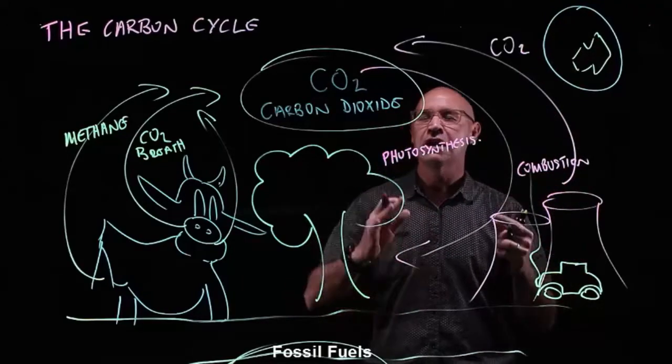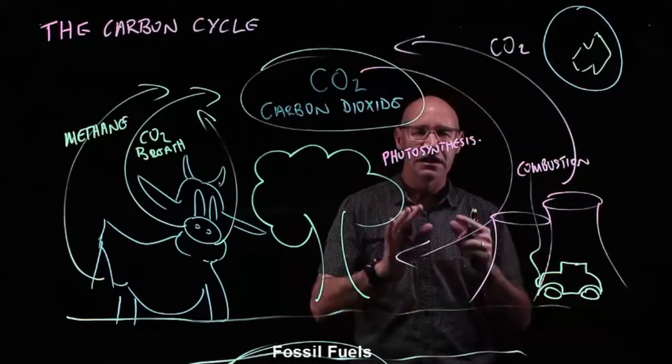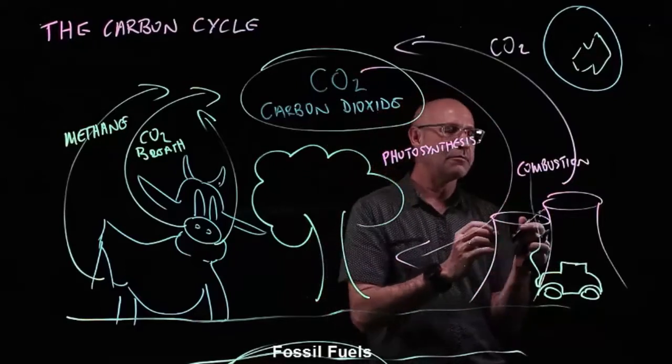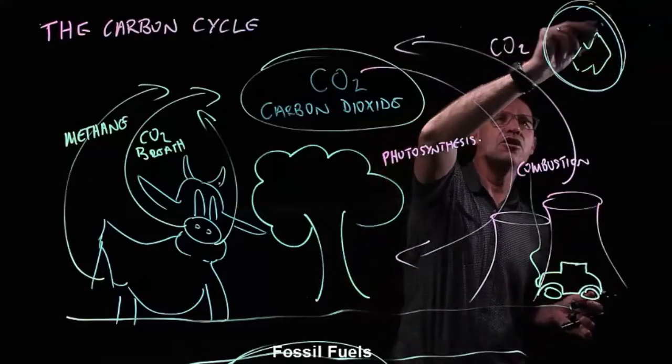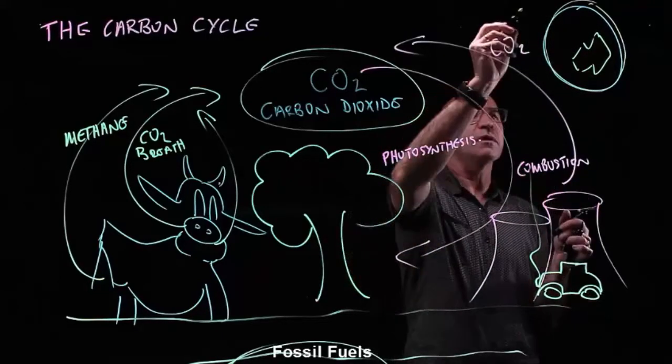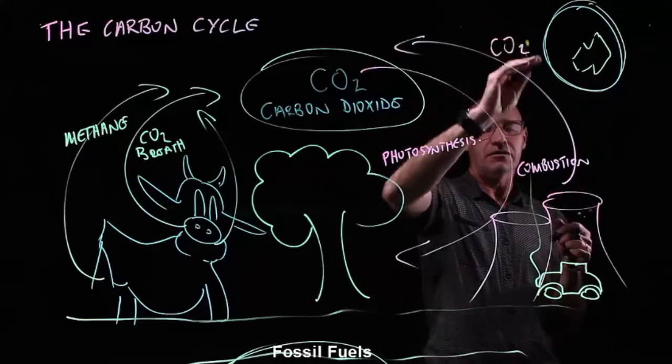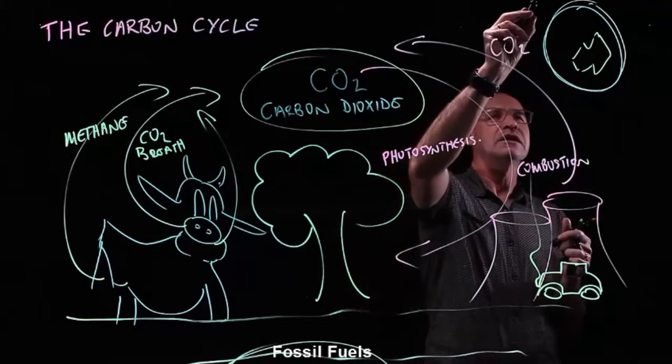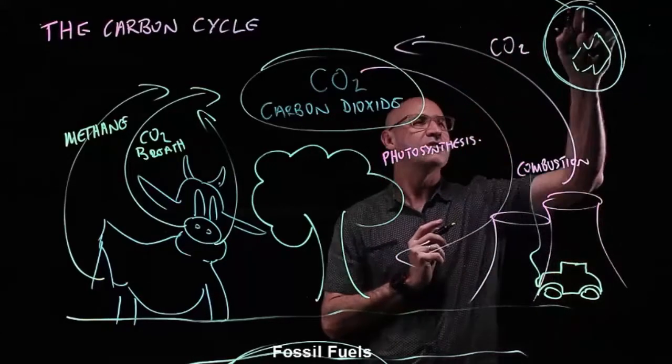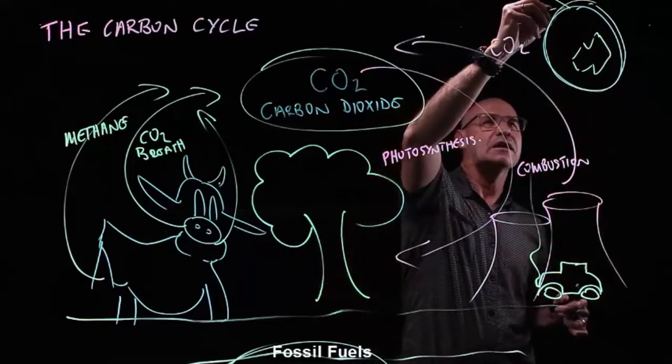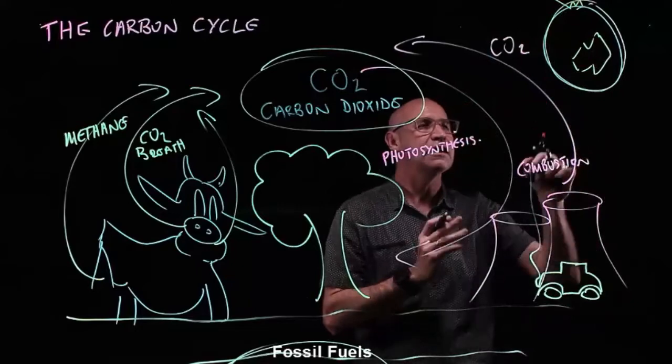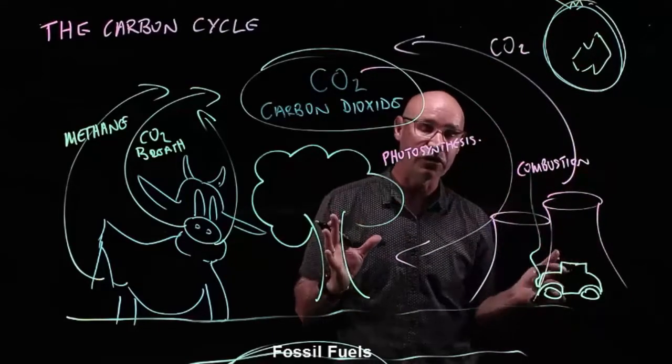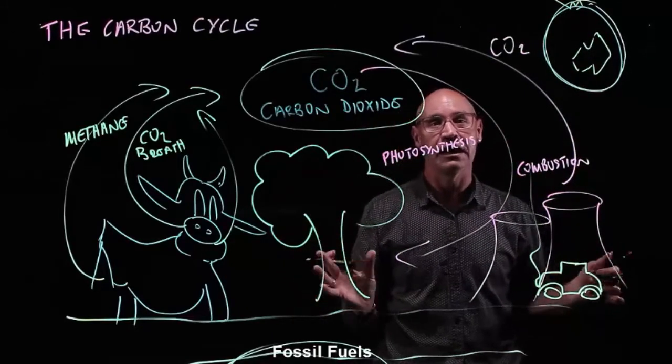Now, this carbon dioxide in the atmosphere actually provides a really important role to keep our Earth warm, because what happens is that sunlight, or energy from the sun, gets trapped inside the layer of the atmosphere and bounces and gets retained within the atmosphere, so we don't cool down as a planet.